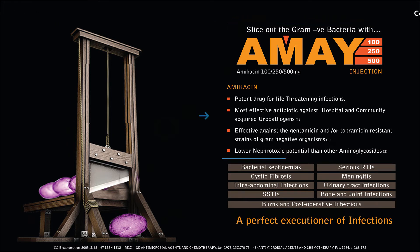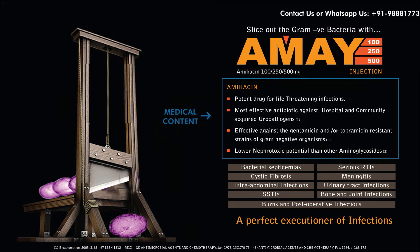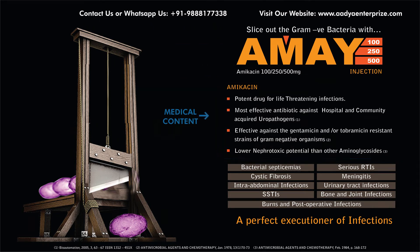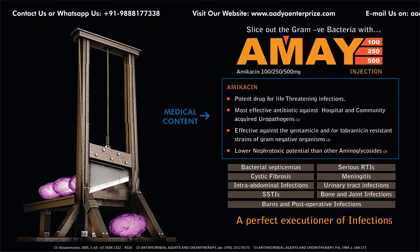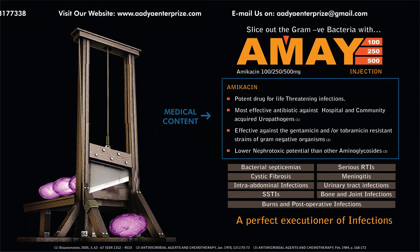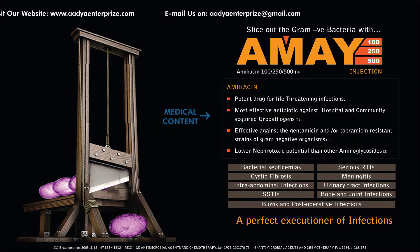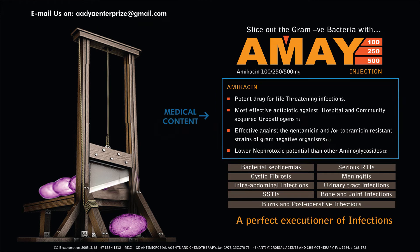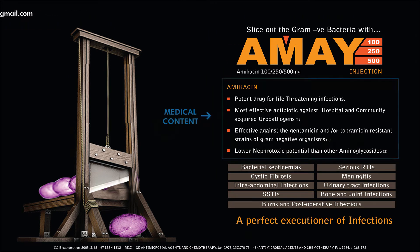The fifth element is the medical content. It is the backbone of any PharmaVisualAid design. Whatever we claim about the brand should be backed by medical and clinical references. Medical content generally contains information like benefits, effects, comparison, and graphs about the salts incorporated in the brand, and should be visible along with references.